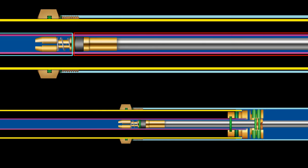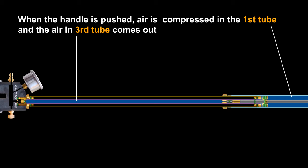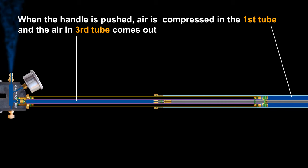At this point, the piston O-ring separates the air of the third tube from the first tube. Air in the first tube is compressed, while third tube air comes out through the outlet valve.